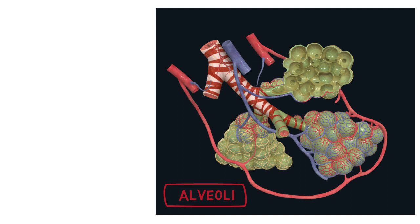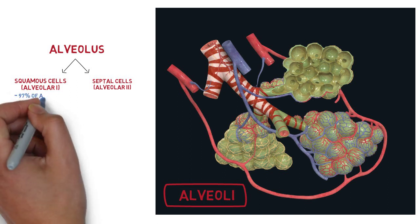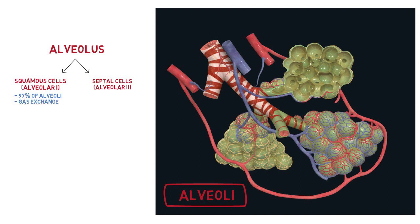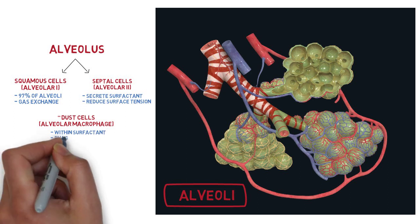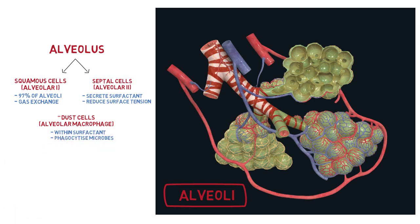The site where gas exchange occurs is called the alveolus, a sac-like structure made up of two types of cells. The first is squamous epithelial cells, also known as alveolar type 1, and the other is the septal cells, also known as alveolar type 2. Squamous cells account for 97% of the cells while the septal cells are interspersed in between them. Gas exchange occurs mainly across type 1, whereas type 2 helps to secrete a substance called surfactant, which reduces the surface tension of the lung, reducing the force required to inflate the lungs during inspiration, and during expiration this surfactant prevents the alveoli from collapsing. There are also alveolar macrophages, also known as dust cells, within the layers of surfactant, which will phagocytize any foreign microorganisms.